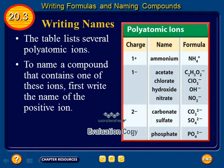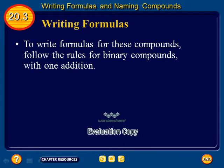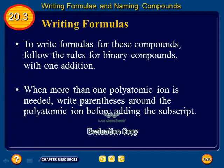To name a compound that contains one of these ions, first write the name of the positive ion, then write the name of the negative ion. To write formulas for these compounds, follow the rules for binary compounds with one addition: when more than one polyatomic ion is needed, write parentheses around the polyatomic ion before adding the subscript.